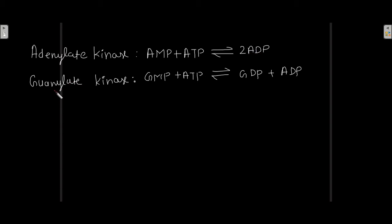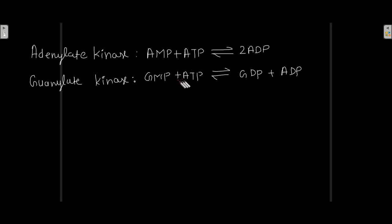Another example is guanylate kinase. This guanylate kinase is phosphorylating GMP and converting it into GDP, and the source of the phosphate for this GMP-to-GDP conversion is ATP. So ATP is acting as the source of the transferred phosphate. These two — adenylate kinase and guanylate kinase — are examples of nucleoside monophosphate kinases.